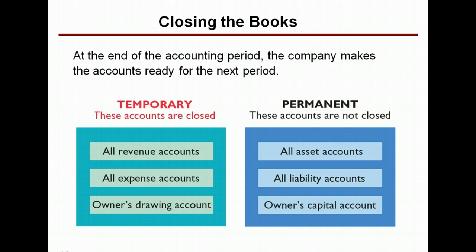Some accounts are not closed — they're the balance sheet accounts and they're permanent accounts: asset accounts, liability accounts, and the balance in owner's equity. At the end of an accounting period, you get to keep your assets — your cash, your accounts receivable, your building — all of that is yours and it needs to stay on the accounting records. Unfortunately, you get to keep all your liabilities too, you have to pay them. Your owner's capital account is assets minus liabilities if we've been doing the accounting correctly. We would like to zero the revenue and expense accounts so that the income statement will show income for just the current accounting period.